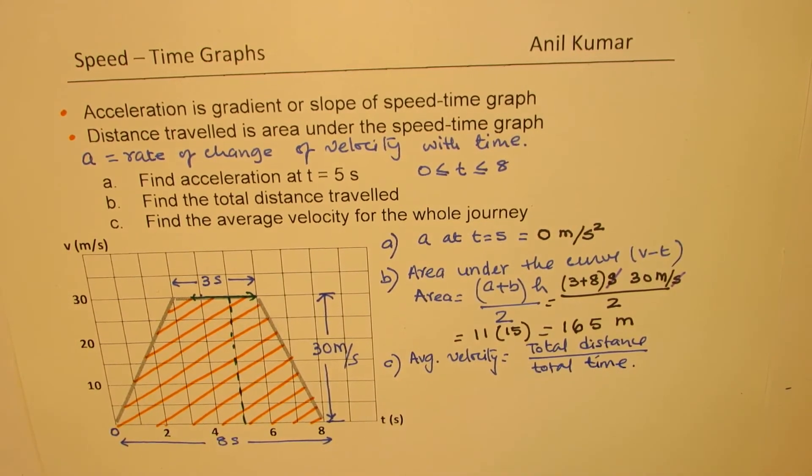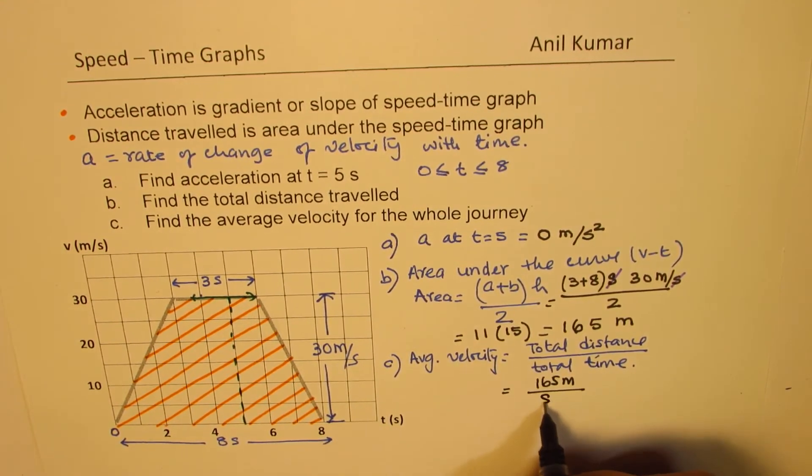So the time taken is 8 seconds. So average velocity is always equal to total distance over total time. So in our case, total distance we just calculated, which is 165 meters, and total time is 8 seconds. So let's divide.